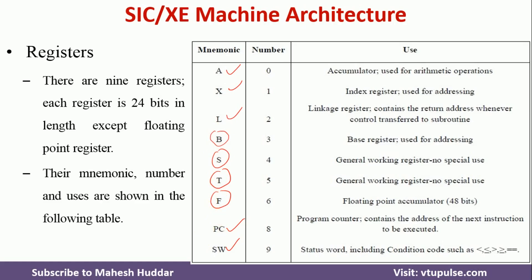Coming back to the new registers: B is the base register, numbered 3, which is used for addressing — specifically whether the instruction uses base-relative addressing mode. If the value of B is equal to 1, we assume it is base-relative addressing mode; otherwise, it is not. S and T are two general-purpose registers with no special use; you can use them for any general operations. SIC-XE supports floating point numbers, so we have a register F to store floating point numbers. F is also called the floating point accumulator.